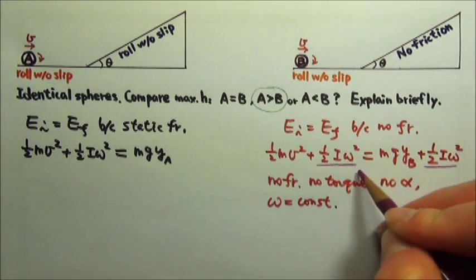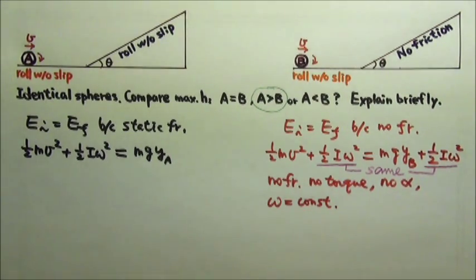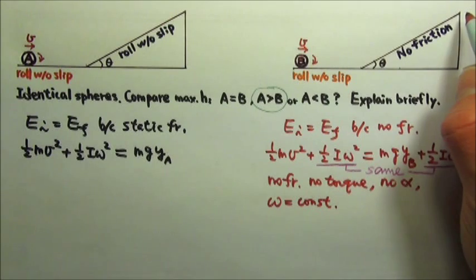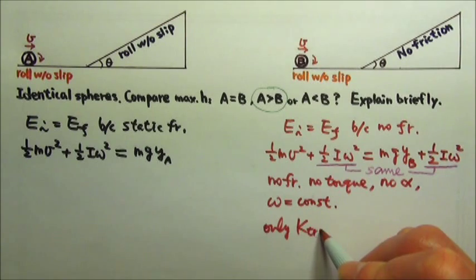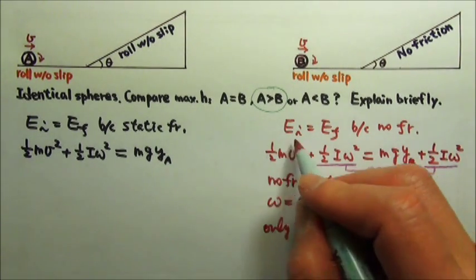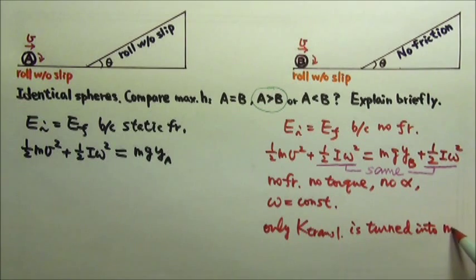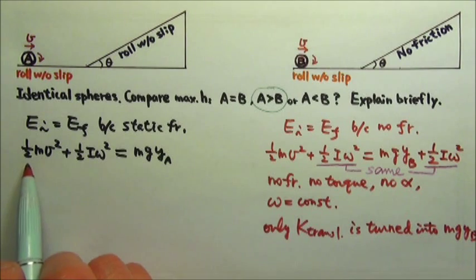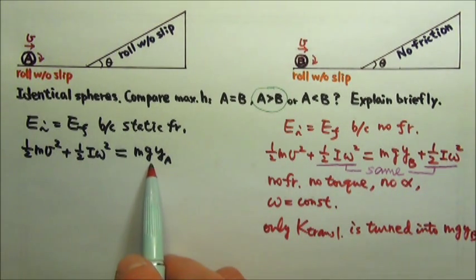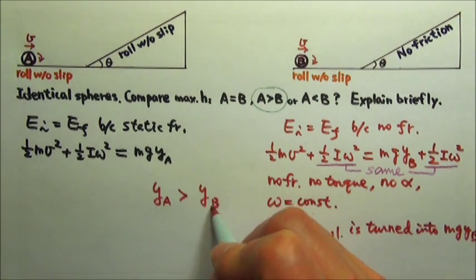And these two are the same. Which means for sphere B, when it goes up to the maximum height, only the translational kinetic energy, the one-half mv squared, is turned into the mgy. While for sphere A, both kinds of kinetic energy are turned into mgy. So sphere A goes up higher than sphere B.